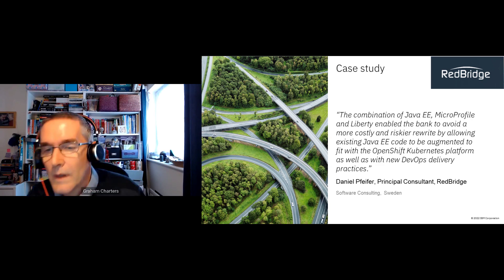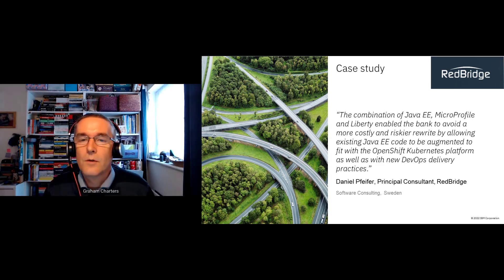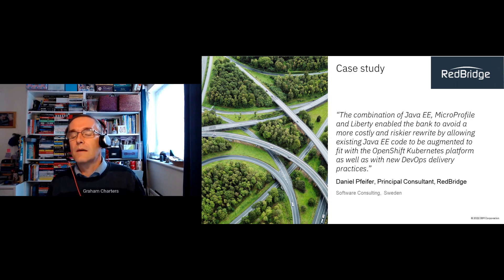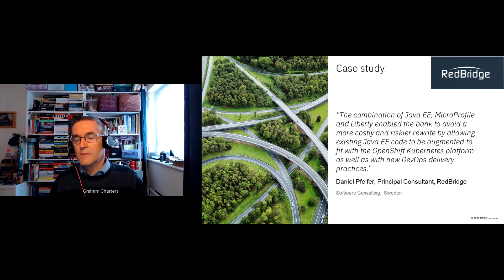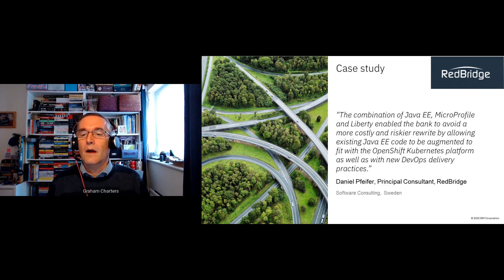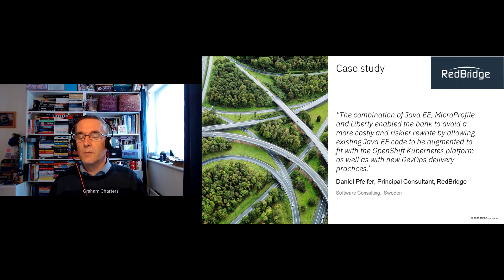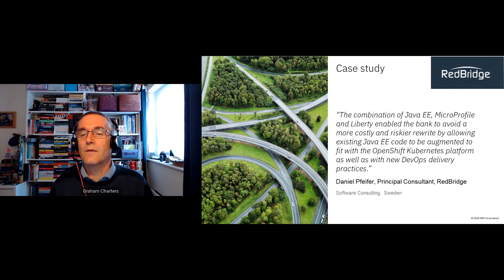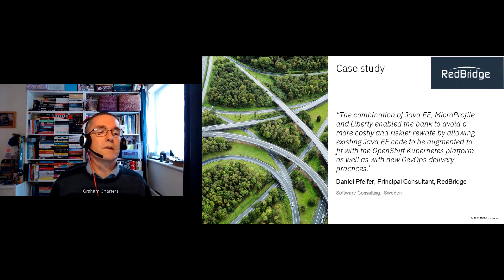Here's a customer example: Redbridge, a business partner, worked with a large European bank to modernize their Java EE applications. They containerized those applications and deployed them into OpenShift, using MicroProfile to add capabilities to help them work better in that environment. From there, they can move to Jakarta EE and also break those applications down into microservices.